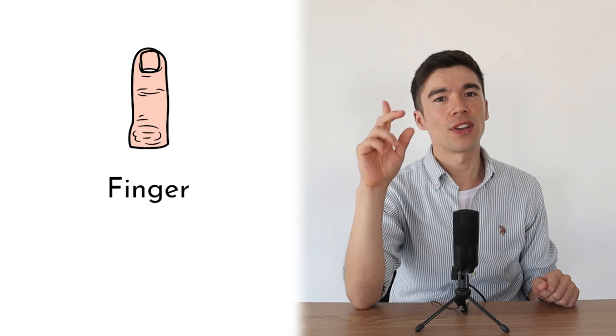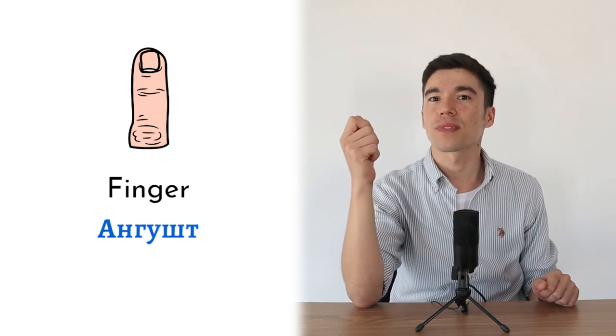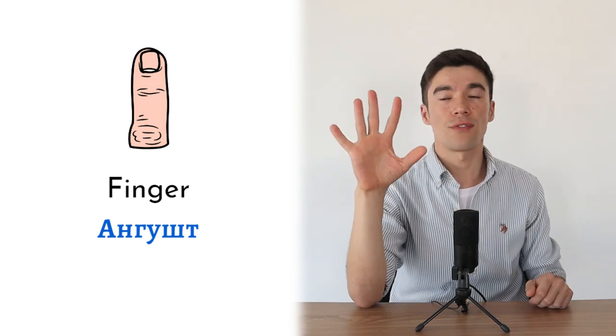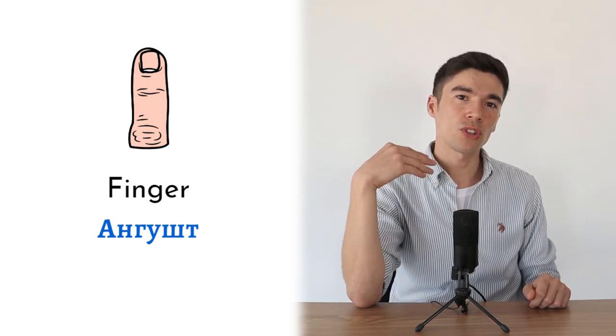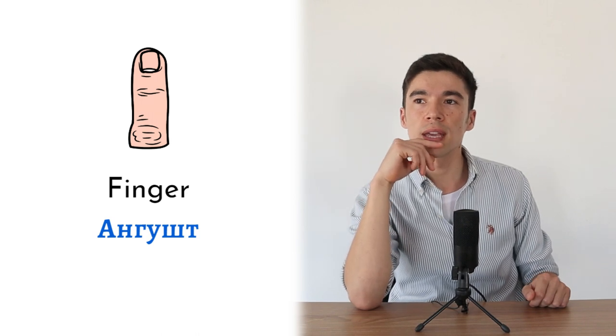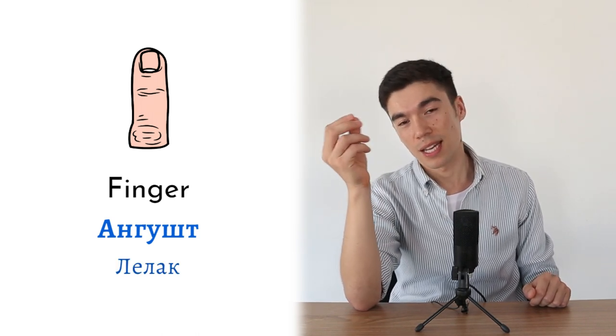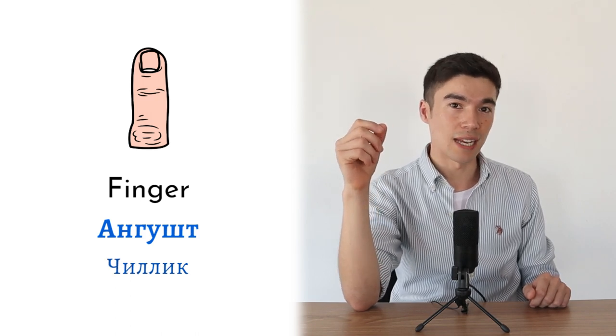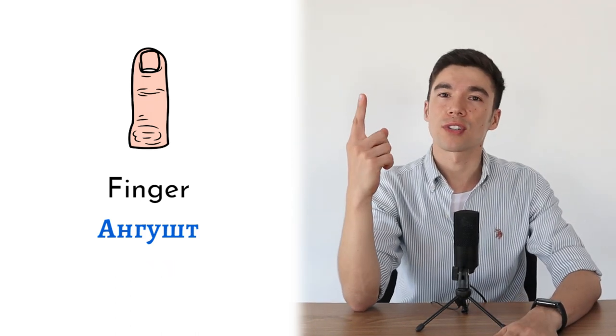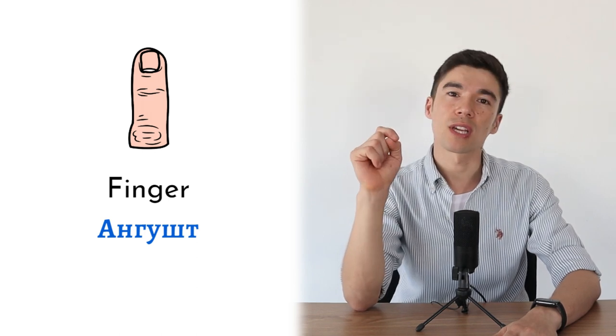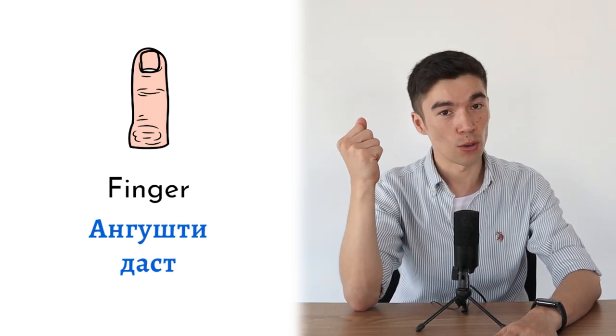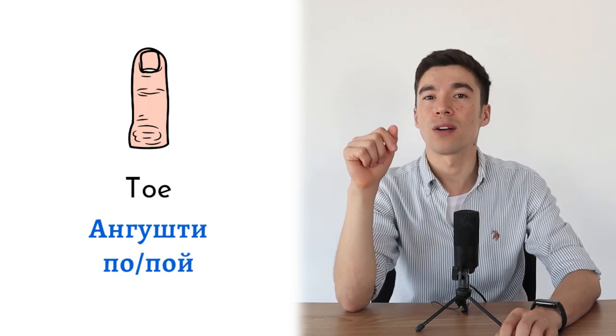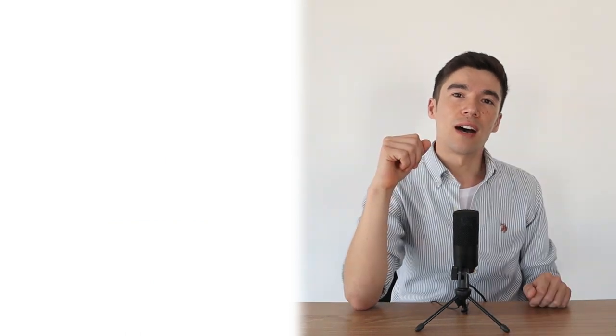Next, finger. Finger is angusht. And it's angusht for both toes and fingers. But we usually say in the north we say lelak. And in the south I've heard many times they say chilik. If you want to be more specific, for example finger you can say angushti dust. And toe will be angushti po or angushti poi.